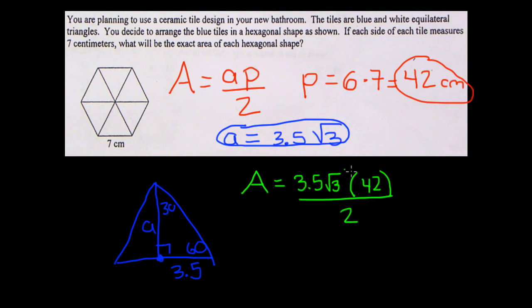Now most of the time you'll simplify the top first. So 3.5 times 42, if you take out your calculator, which you're allowed to use, and do 3.5 times 42, you get 147 radical 3, and that's divided by 2.